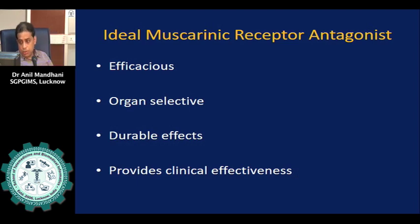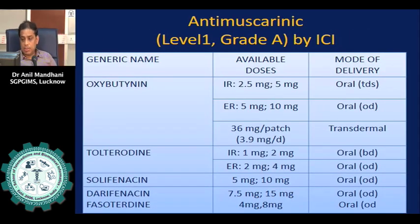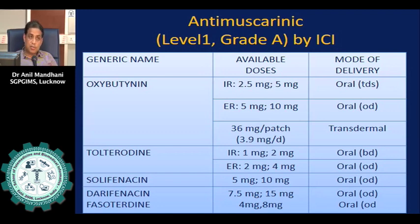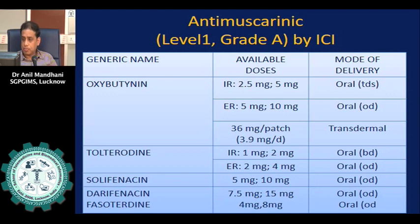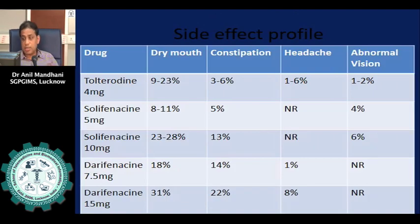The mnemonic DIAPERS helps rule out transient causes of urinary leak: Delirium, Infection, Atrophy, Pharmaceuticals, Psychological, Endocrine or excess urine output, Restricted mobility, and Stool impaction. Constipation is an important factor for lower urinary tract symptoms — in the elderly after age 60–70, constipation per se can cause obstructive urinary symptoms. Common drugs causing incontinence include anticholinergics, alpha-agonists, alpha-antagonists, diuretics, sedatives, hypnotics, and CNS depressants.